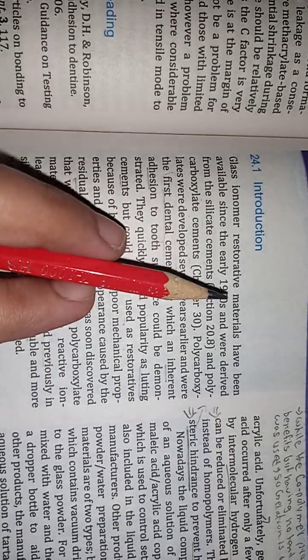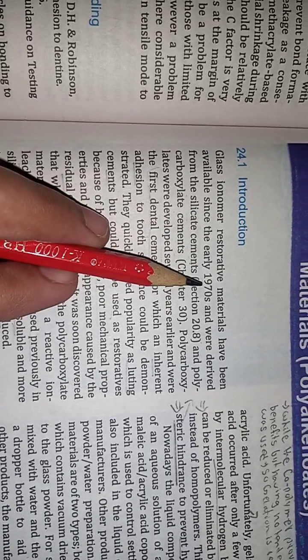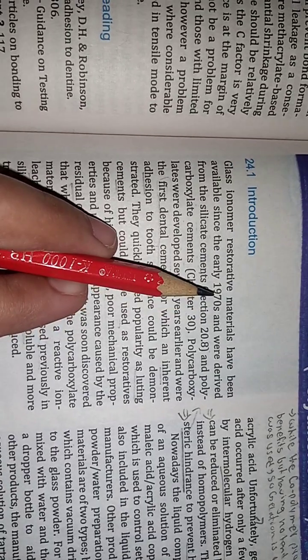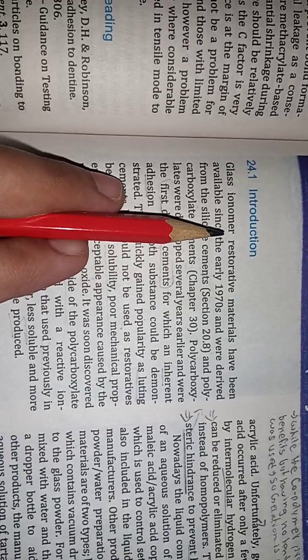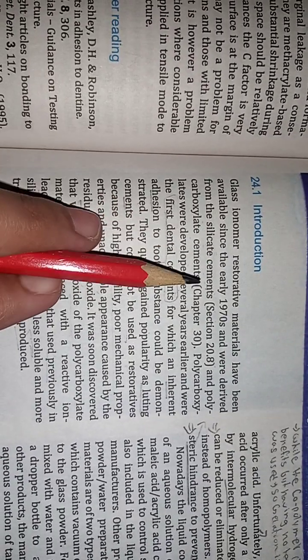We are saying that the Glass Ionomer Restorative Materials, which I will read you now, this is available in 1970, and this is the direct result of silicate cement.